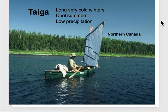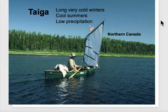The taiga, or continental climate, tends to have very long cold winters and very cool summers, and is not very wet. Northern Canada — specifically the central part of northern Canada — would be a taiga climate.